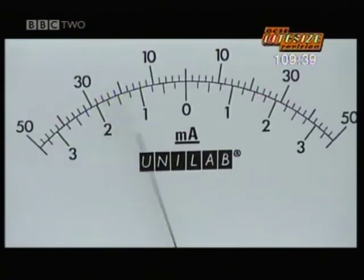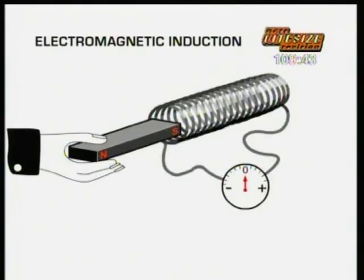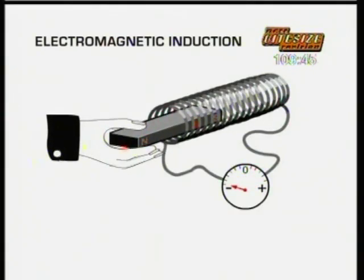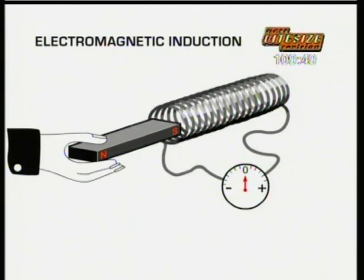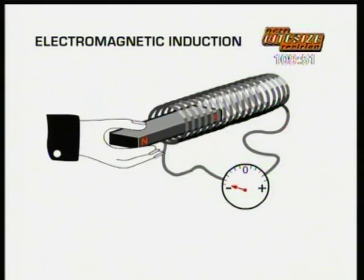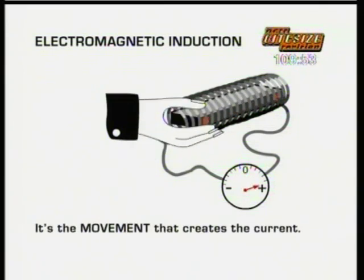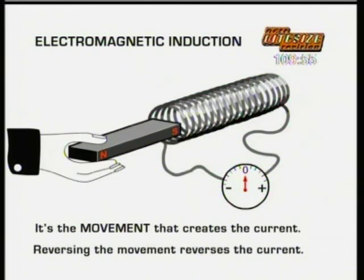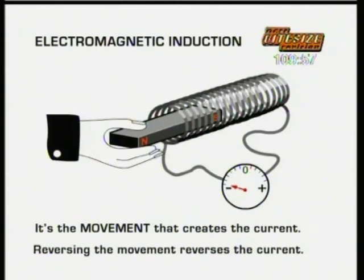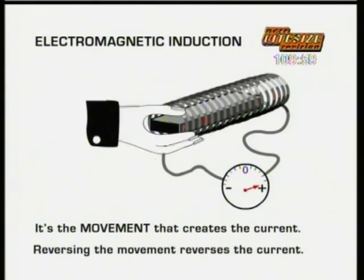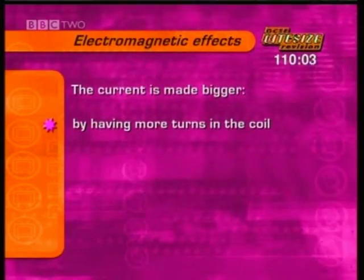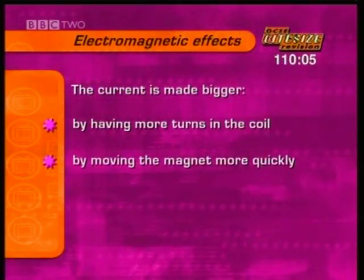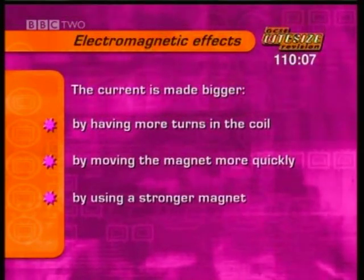It turns out that it doesn't matter if it's the magnet that moves or the coil. A magnet moving through the coil does create a current in the wire. Moving the coil past the magnet produces the same effect. It's the movement that creates the current. Reversing the movement reverses the current. The current is made bigger by having more turns in the coil, by moving the magnet more quickly, or by using a stronger magnet.